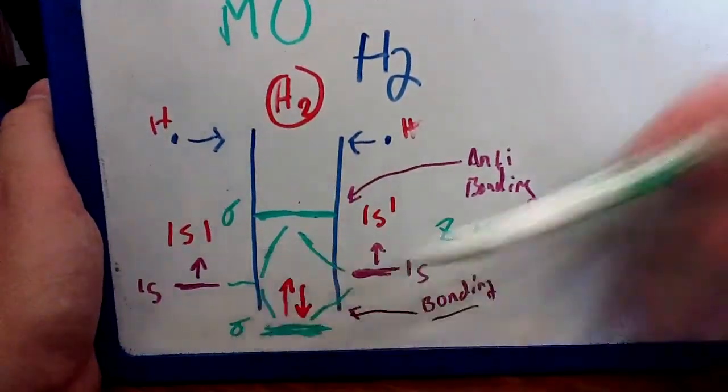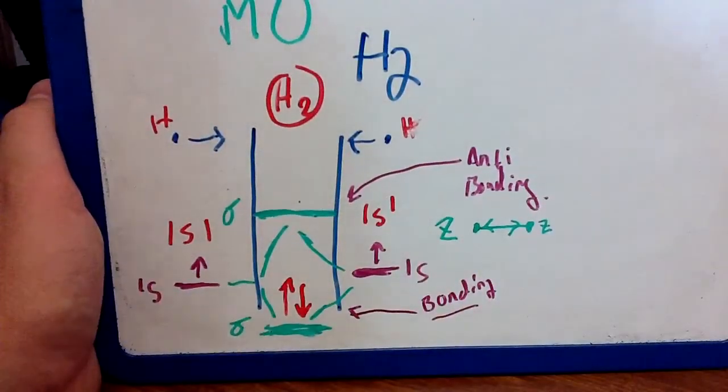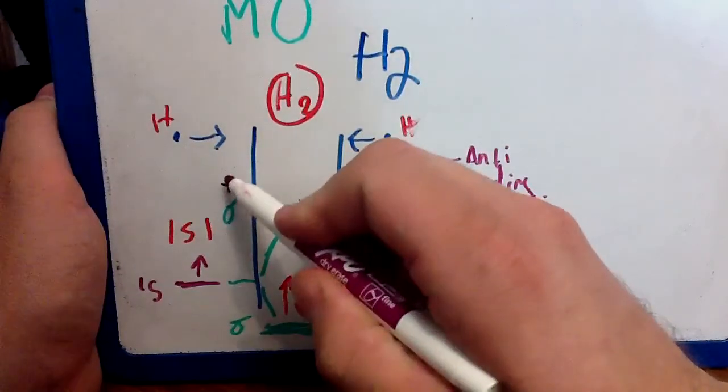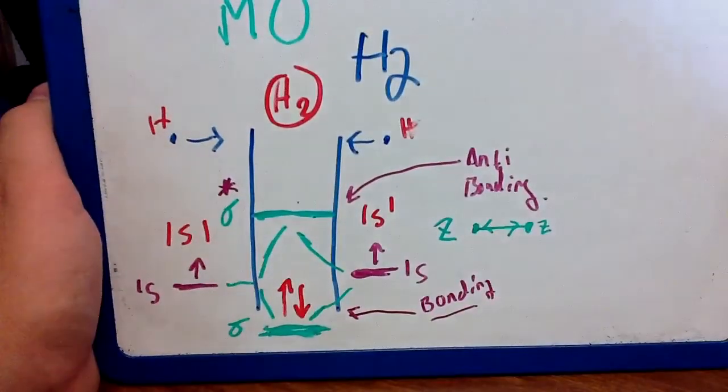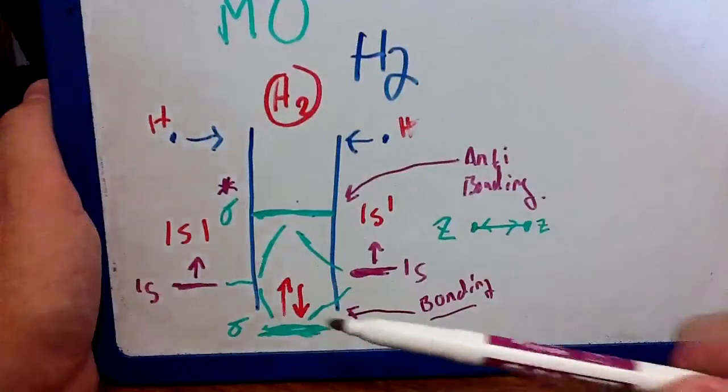And when they don't occur along the z-axis, and I'll talk about those later on, we'll call those pi orbitals. But for now these are sigma orbitals, and the anti-bonding orbital will often put a star above that or near it, a sigma star, to identify that as an anti-bonding orbital.